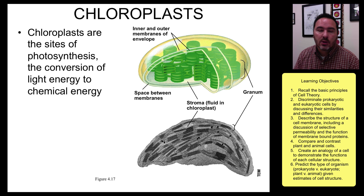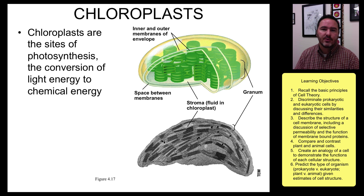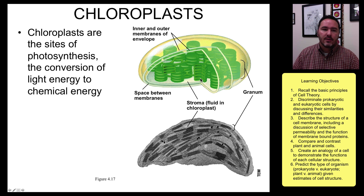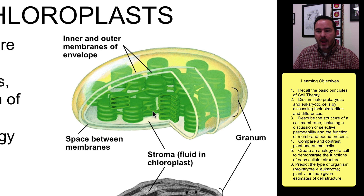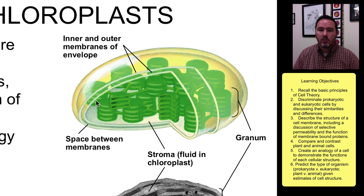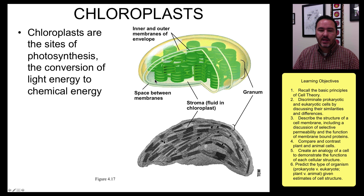Chloroplasts, as we learned before, are derived from bacteria that lived symbiotically with early eukaryotic cells. They're the sites of photosynthesis, which we'll cover in another lecture. They have an interesting arrangement: an inner and outer membrane, and these grana which are the sites where photosynthesis actually takes place. The whole point of the chloroplast is to turn light energy into chemical energy.